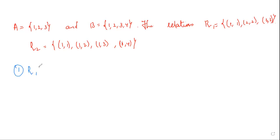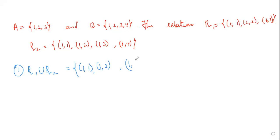First we are finding R1 union R2. We write all the ordered pairs from both R1 and R2. We start with R1's pairs: (1,1). Then (1,2) is in R2 but not R1, and since it is the union we include it. Similarly, (1,3) and (1,4) from R2, and (2,2) and (3,3) from R1 are all included. So R1 union R2 = {(1,1), (1,2), (1,3), (1,4), (2,2), (3,3)}. This is similar to the union we do for sets.